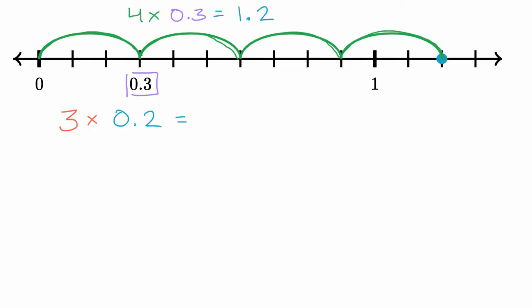All right, so let's think about where 2 tenths is. This is 1 tenth, 2 tenths is right over there. This is 0.2, and we're going to multiply it times three.